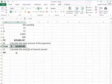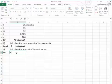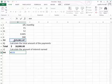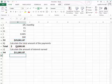So what is the amount of interest earned? The amount of interest would be the $29,081.87 minus the $18,000 that the parents paid in. So over the course of 15 years, the account earned $11,081.87.